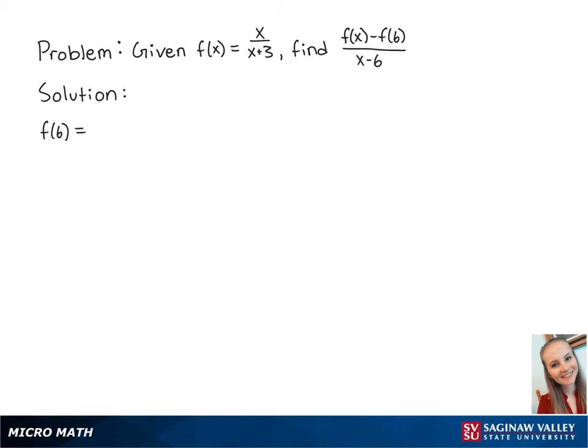First, we're going to find f of 6, which is equal to 6 over 6 plus 3, which is equal to 6 over 9, which simplifies to 2 thirds.